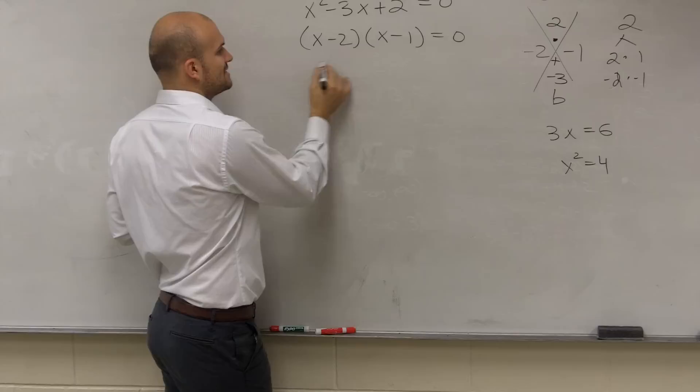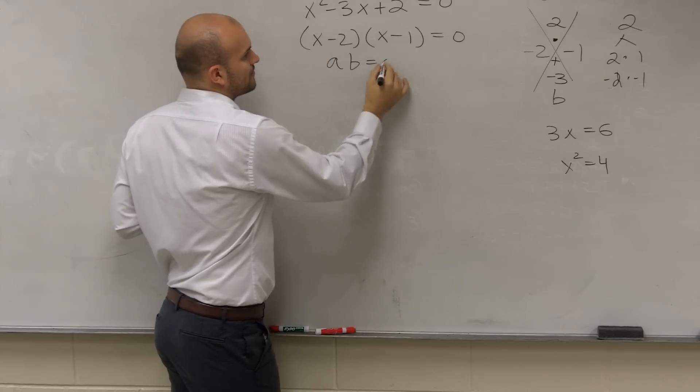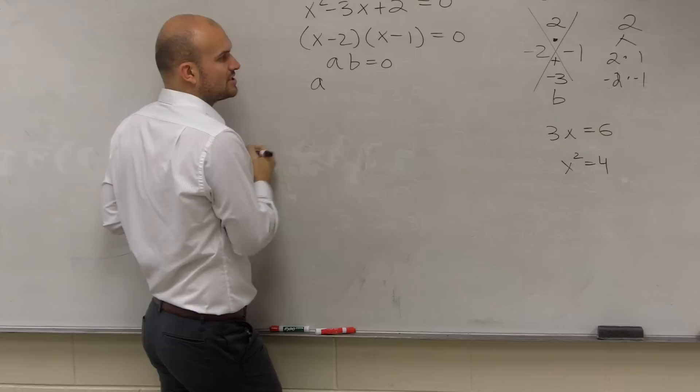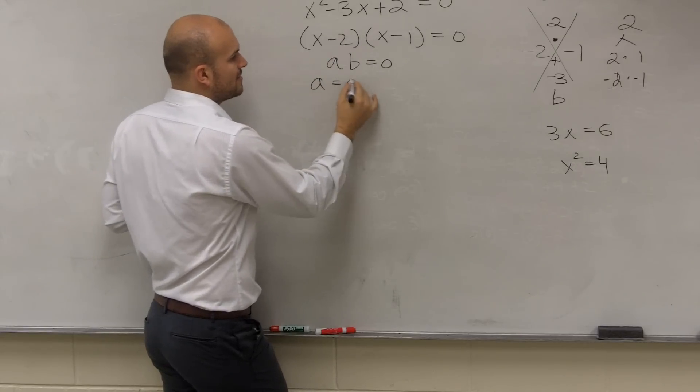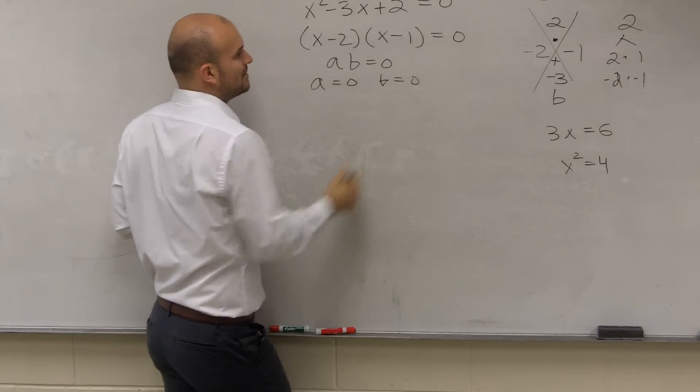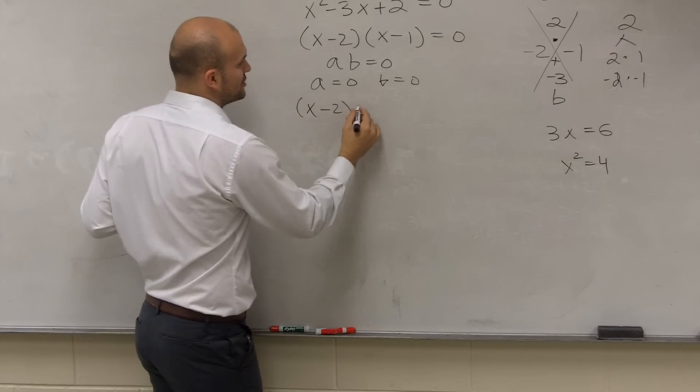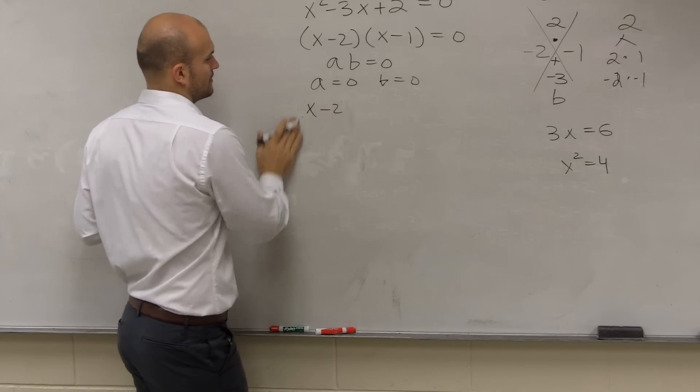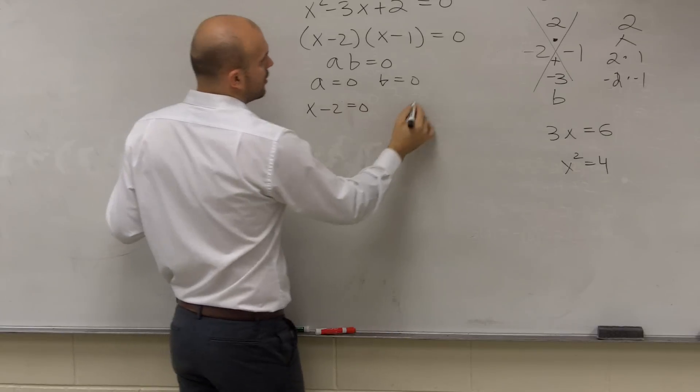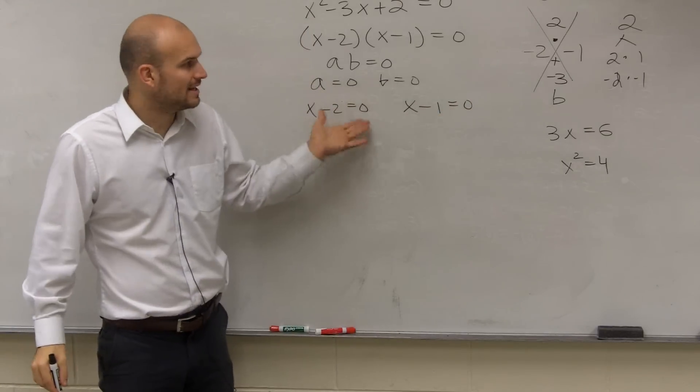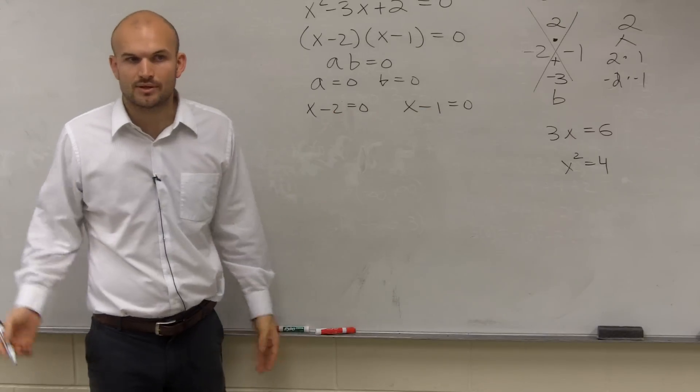Now, what I can do is use my zero product property, which states if two numbers multiply to give you zero, or two factors multiply to give you zero, that means a equals zero, or b equals zero. So therefore, I can write x minus 2 equals 0, or x minus 1 equals 0.